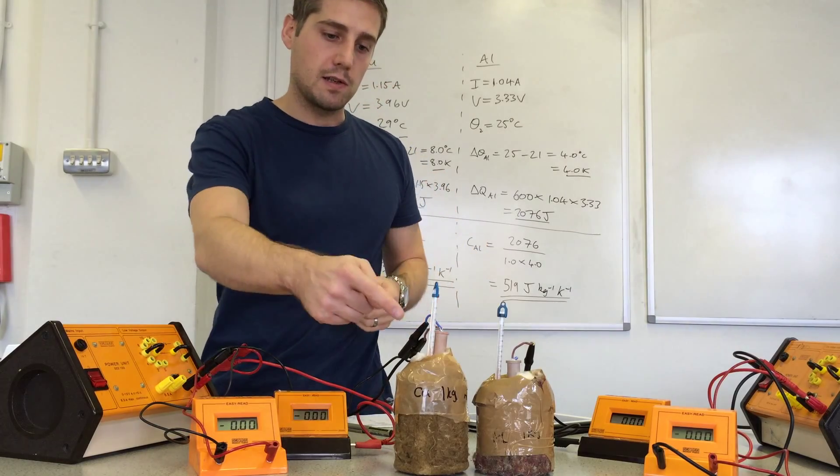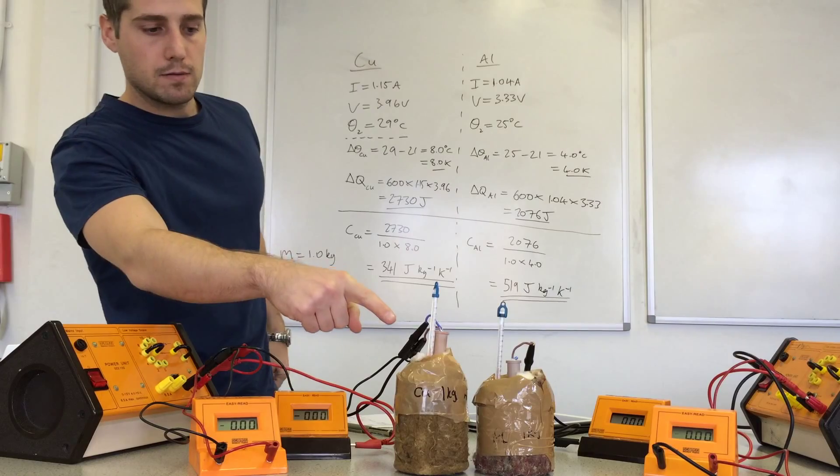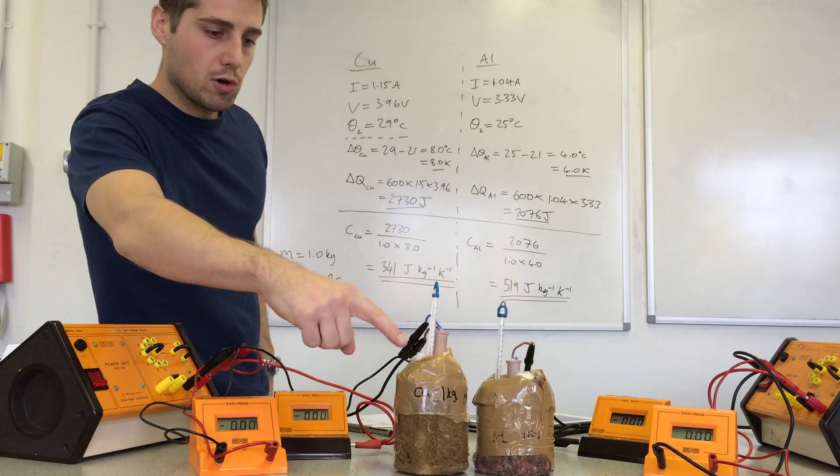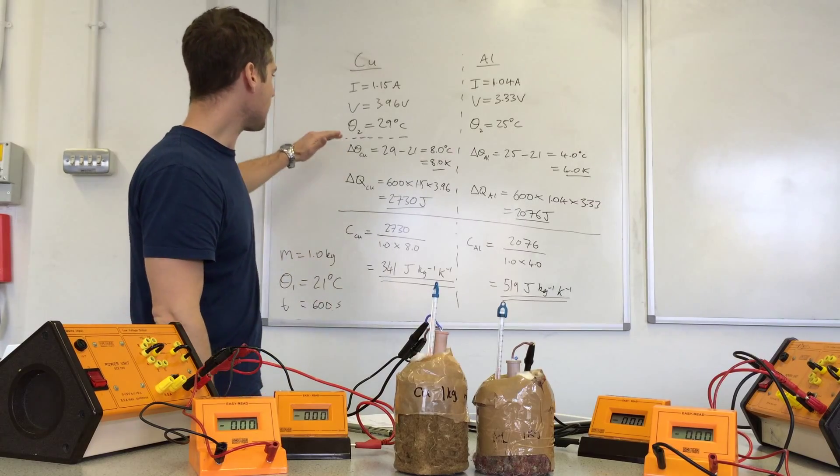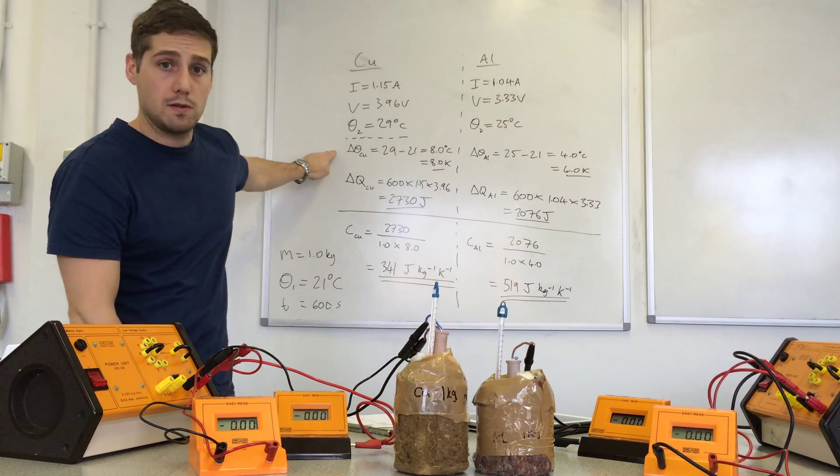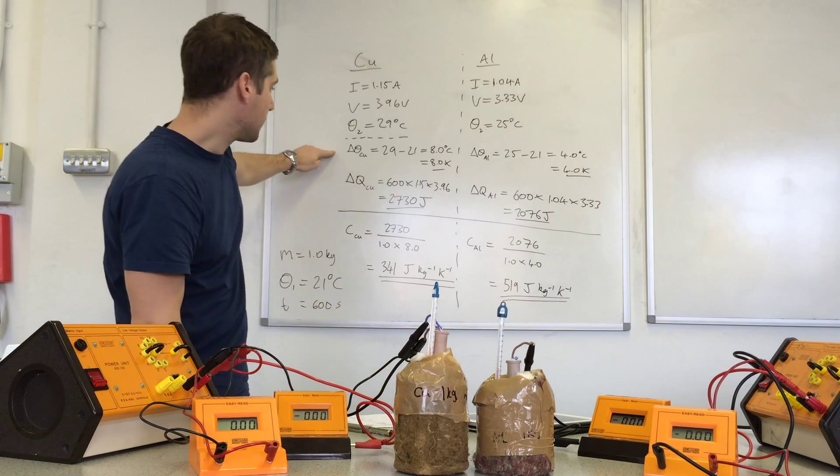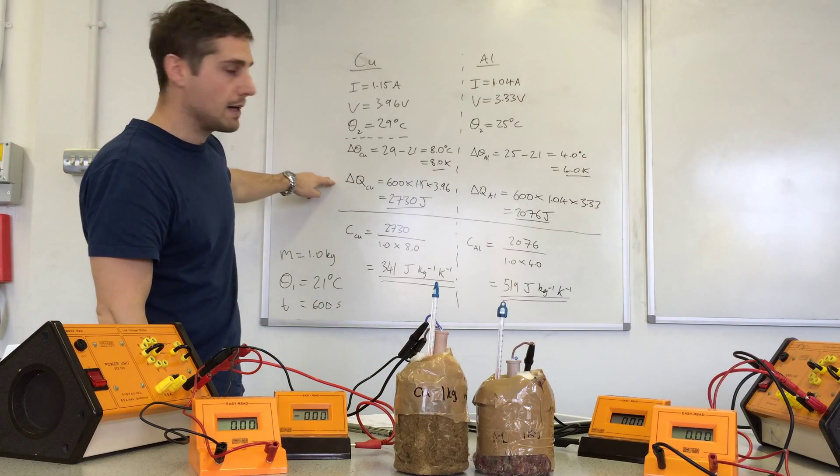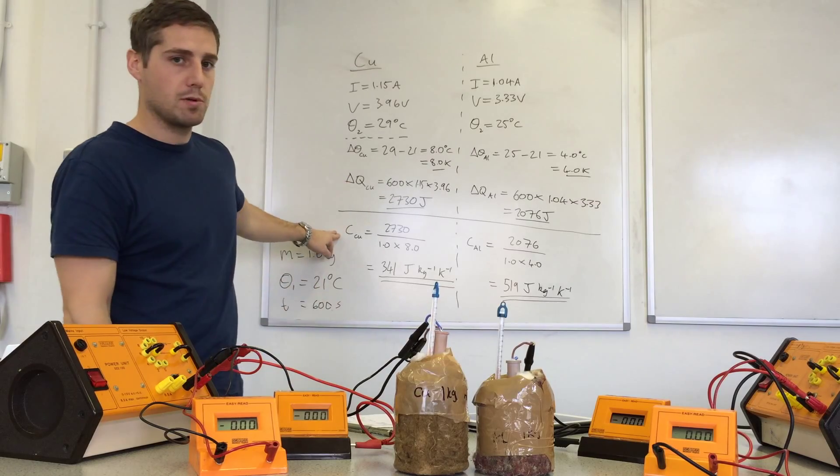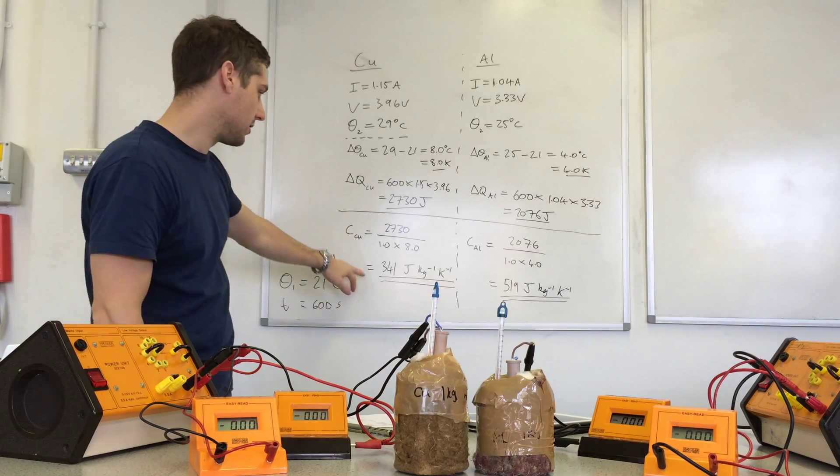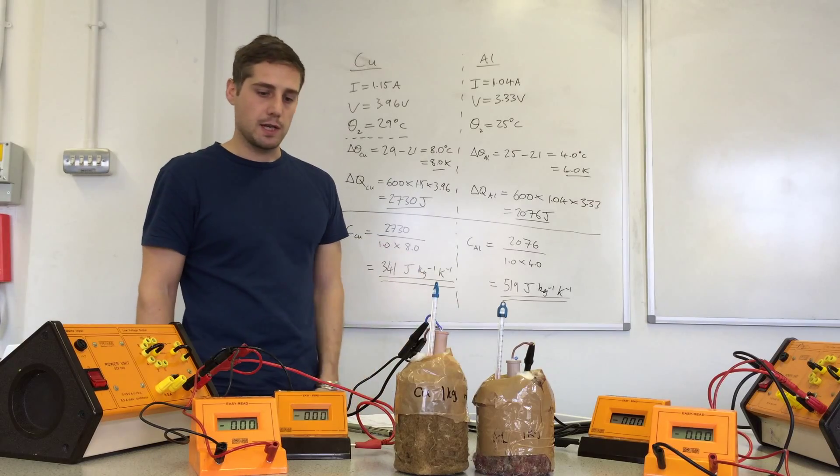Left it on for 10 minutes, recorded the maximum temperature rise because after you switch the heater off there's still heat to be dissipated and to travel through the block and to reach the thermometer. So we wanted to see what the maximum temperature rise was. Worked out the temperature difference, worked out the heat transferred from the heater, then put that into the specific heat capacity equation to work out the specific heat capacities.